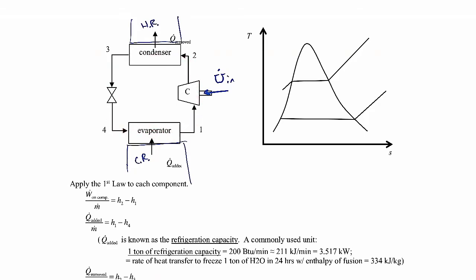If we sketch out the cycle on the TS diagram, state one is typically located right along the saturated vapor line. Moving through the compressor, we go to a higher pressure — a different isobar. At 100% isentropic efficiency we'd go to point 2s, but in reality we increase entropy a little and go to state two. Compressors operate best with pure vapor rather than a saturated vapor-liquid mixture, so we're typically operating in the superheated vapor region. The pressure at state two is greater than at state one. Then we go through the condenser to a saturated liquid state at constant pressure, giving us state three.